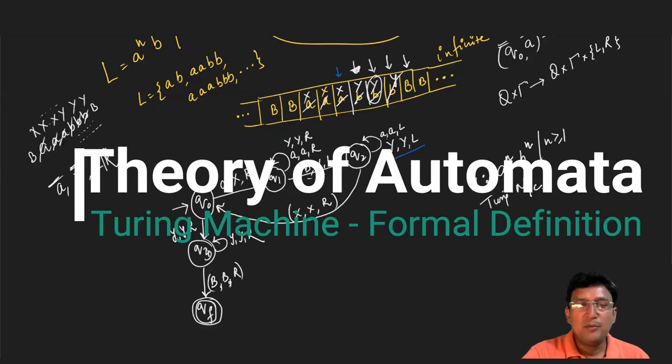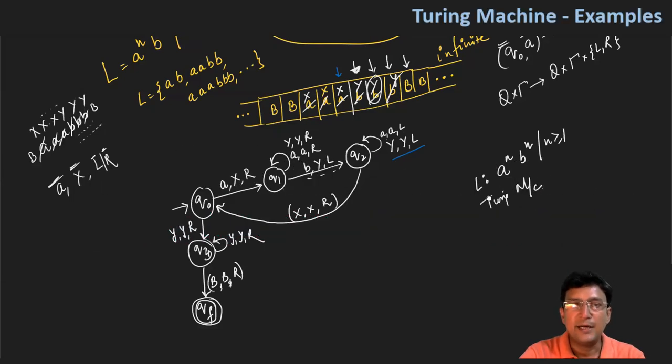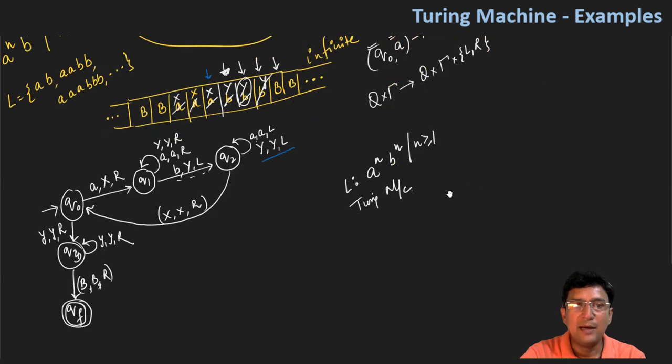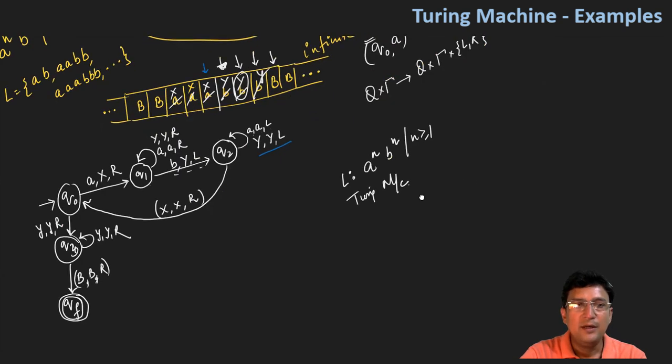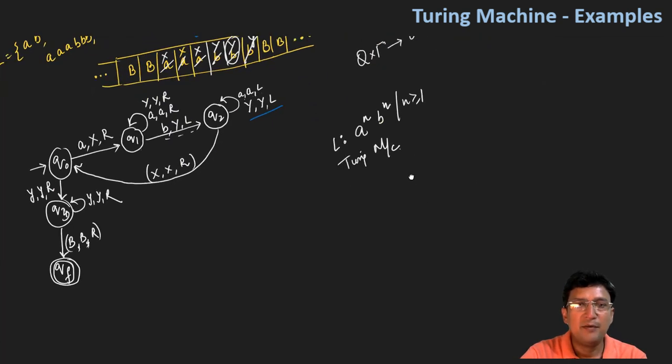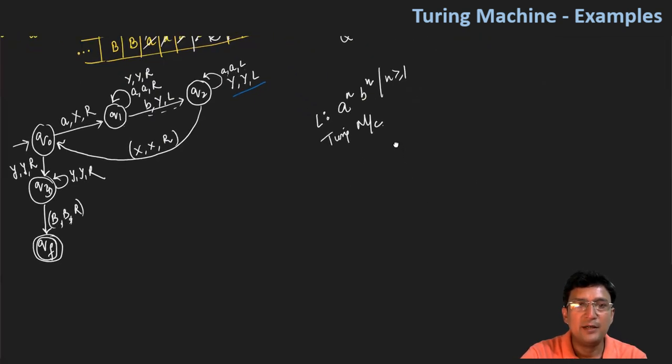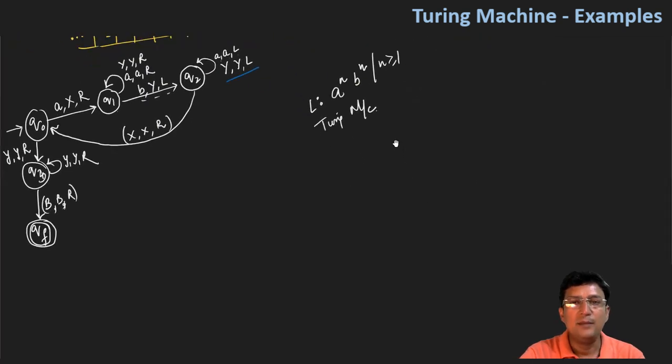Hello everyone. In the last lecture, we have designed a language for Turing machine design, and the language was a power n, b power n, where n is greater than or equal to 1.